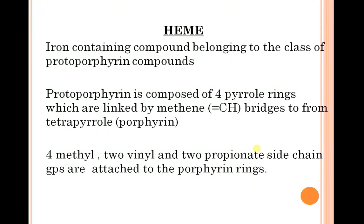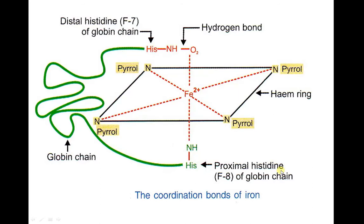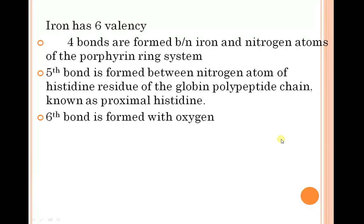Heme is an iron-containing component belonging to the class of protoporphyrin compounds. It has 4-methyl, 2-vinyl, and 2-propionate side chains attached to the porphyrin ring. We can observe the porphyrin rings and how the heme attachments occur. Iron has 6 valency bonds: 4 between iron and nitrogen atoms of the porphyrin ring system. The fifth bond is formed between the nitrogen of the histidine residue of the globular polypeptide chain, known as proximal histidine. The sixth bond is formed with oxygen.